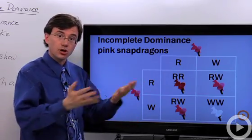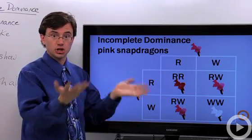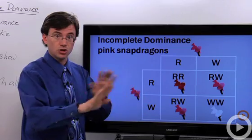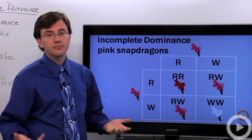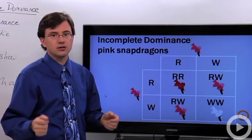So that's the big difference: with codominance, they show both effects but no blending. With incomplete dominance, it's all blended.